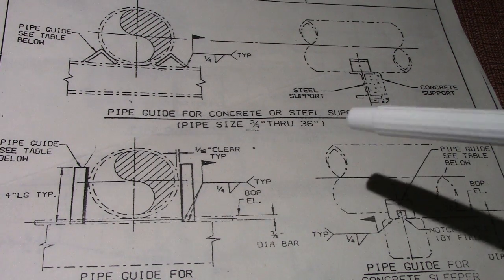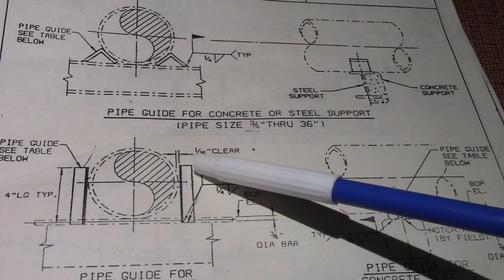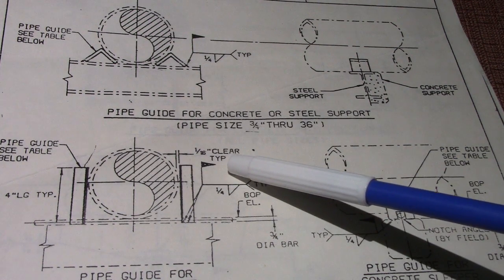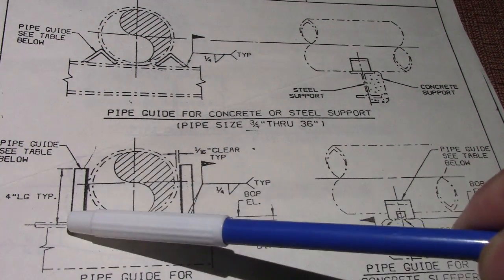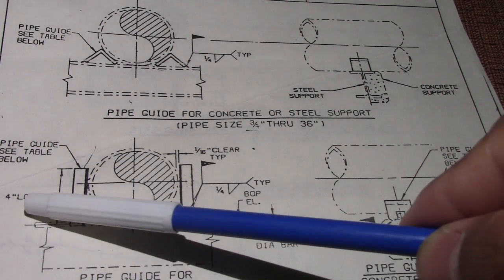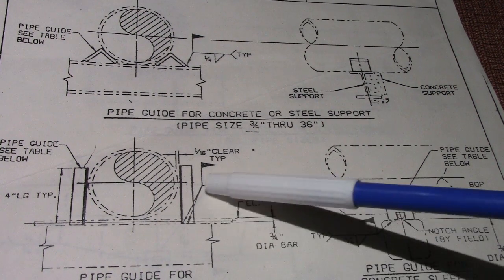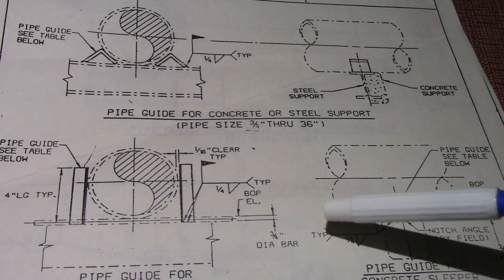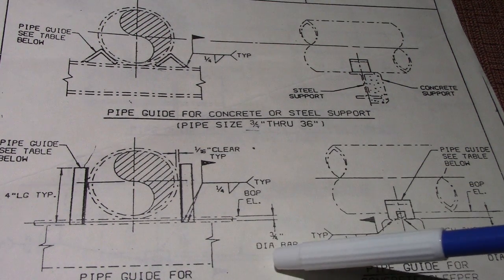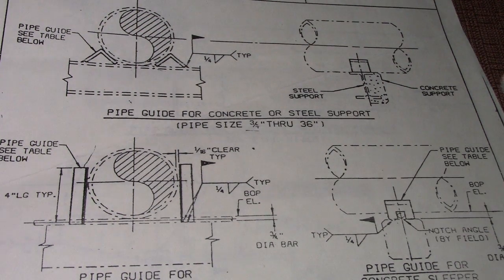This is the specification of the guide. They have a specification of clearance — 1/16 clearance. The length of this guide is 4 inches. They also have weld symbols: fillet weld, arrow side. And the diameter of bar is 3/4. All details are here in the support details.